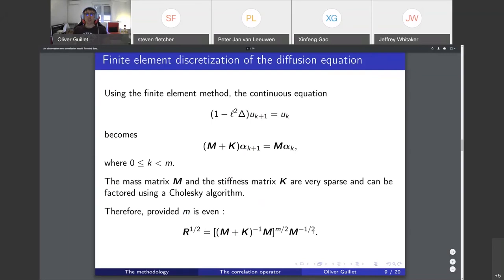Provided that the number of steps m is even, you get this nice formula for R, which is 1 minus Laplacian. This is m plus k inverse m, and you do that over m over two steps and you normalize at the end.